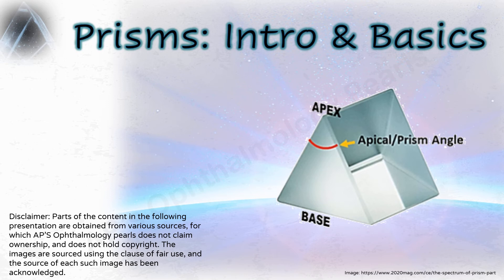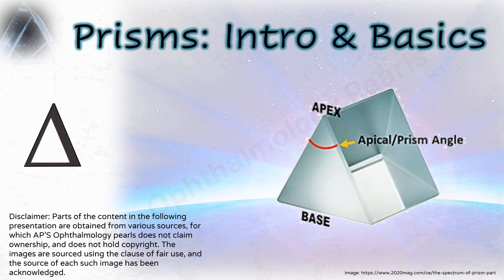Hello viewers. Ophthalmic prisms are solid, three-dimensional, triangular, transparent objects that consist of two refracting surfaces that meet at an apex. They have no refracting power but deviate light rays that pass through them. They are best described in terms of their power, which is in prism diopters, denoted by the upper case Greek letter delta (Δ).